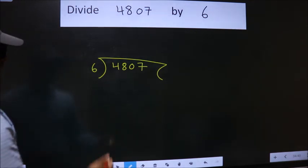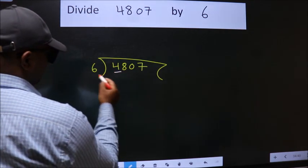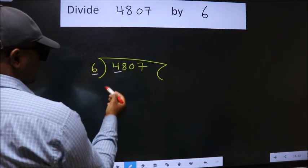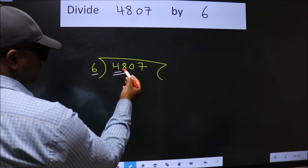Next, here we have 4, here 6. 4 is smaller than 6, so we should take two numbers, 48.